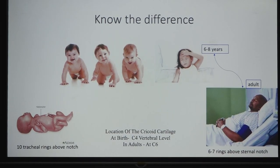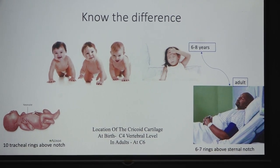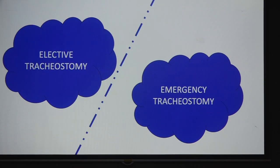We must know the difference especially when dealing with the pediatric population. In neonates, there are almost 10 tracheal rings above the sternal notch, whereas after 6 to 8 years it is almost the same as adults — 6 to 7 rings above the sternal notch. Most tracheostomies should be done electively, but we should be prepared for emergency situations as well.